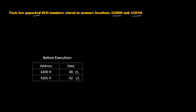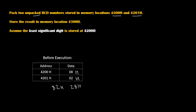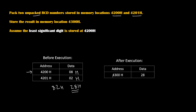Now we need to pack them. After packing these numbers it will become either 82H or 28H. To decide which one, we read the last line of the program: the least significant digit is stored at memory location 4200H. So 08 at 4200H is our least significant digit, that's why the result is going to be 28H. We need to store that result at memory location 4300H, so after execution we expect value 28H at 4300H.